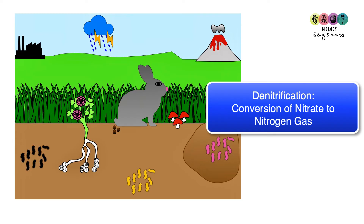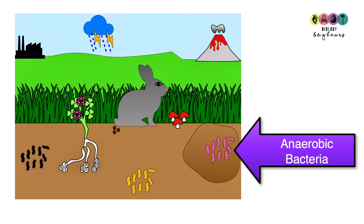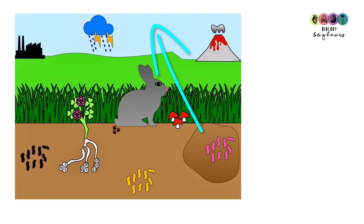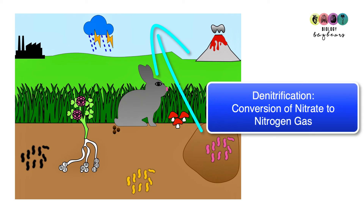The final step in the nitrogen cycle is denitrification — the conversion of nitrate to nitrogen gas. It's carried out by anaerobic bacteria that thrive in swampy, boggy soil. This is something to consider if land is flooded: if land is flooded, these bacteria will thrive and essentially remove all of the nitrogen out of the soil, returning it as nitrogen gas.